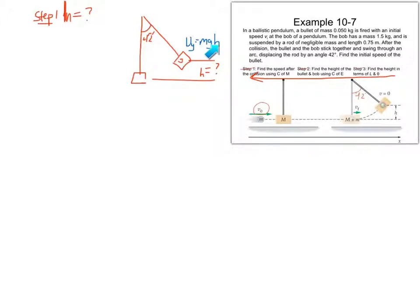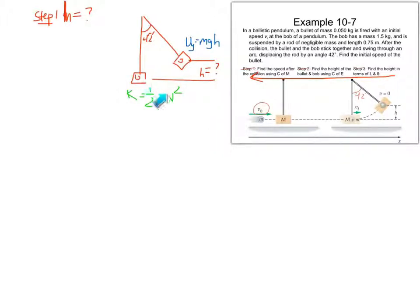Assuming conservation of energy, the potential energy at the top is going to be equal in magnitude to the kinetic energy that the system has right after the collision. If these are equal, we should be able to find the velocity of the bullet and bob system, because we know the mass of both of them together, and we can solve for the velocity. All because we set the potential energy equal to the kinetic energy — conservation of energy.